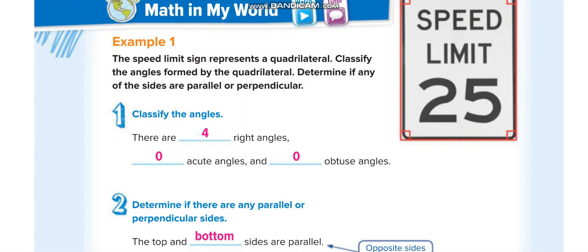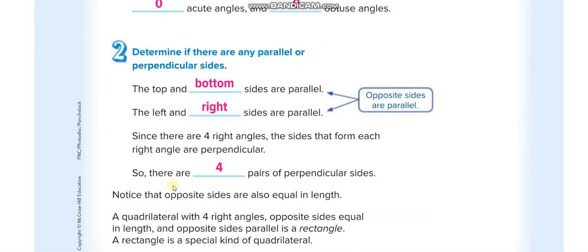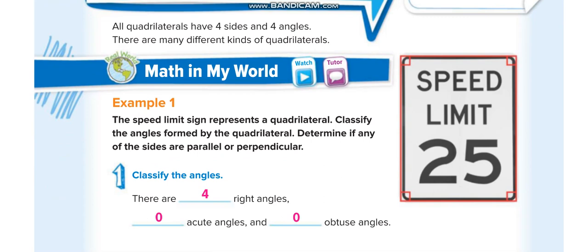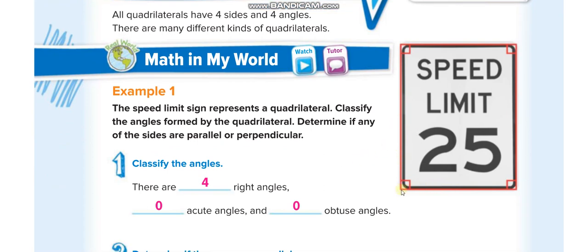When two lines cross each other, they are not parallel. Parallel lines never meet. But when two lines cross each other and form an angle of 90 degrees, they are perpendicular to each other. You can see this right-angle box, or you can measure it with a D-shaped protractor. Let us move to the next page.